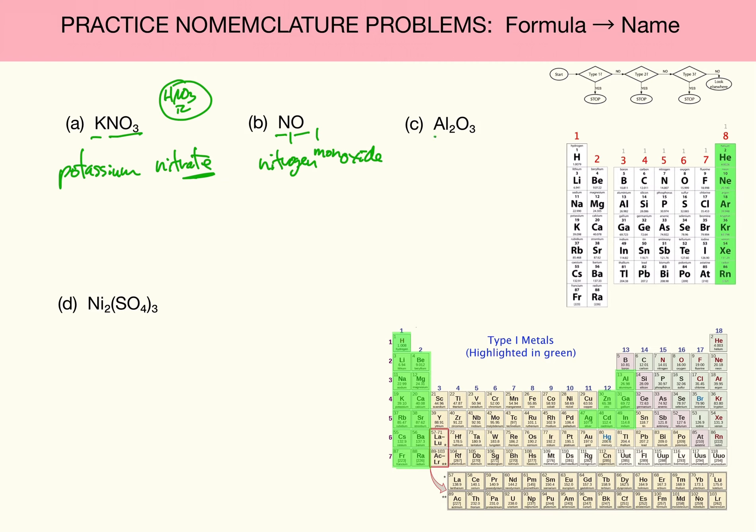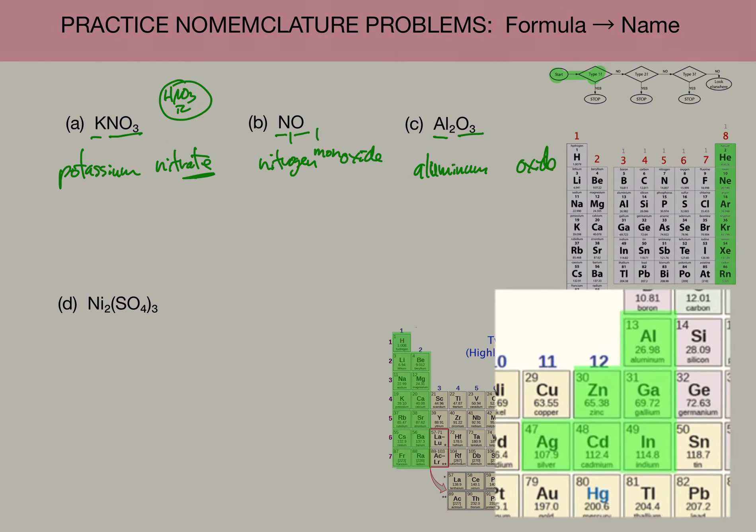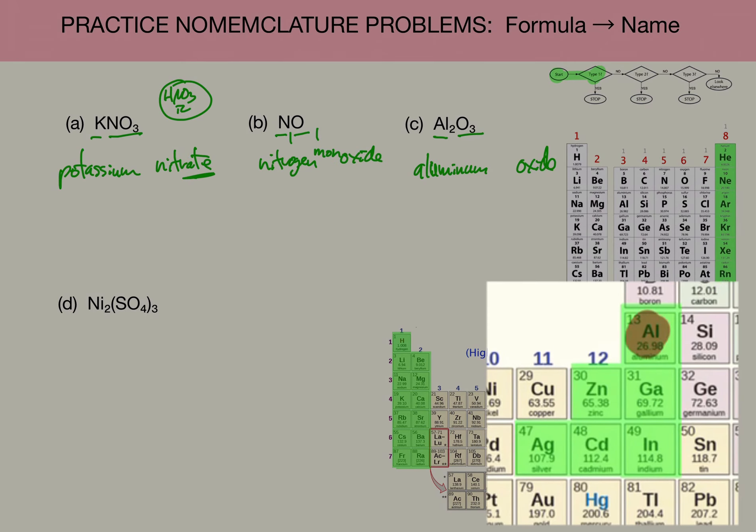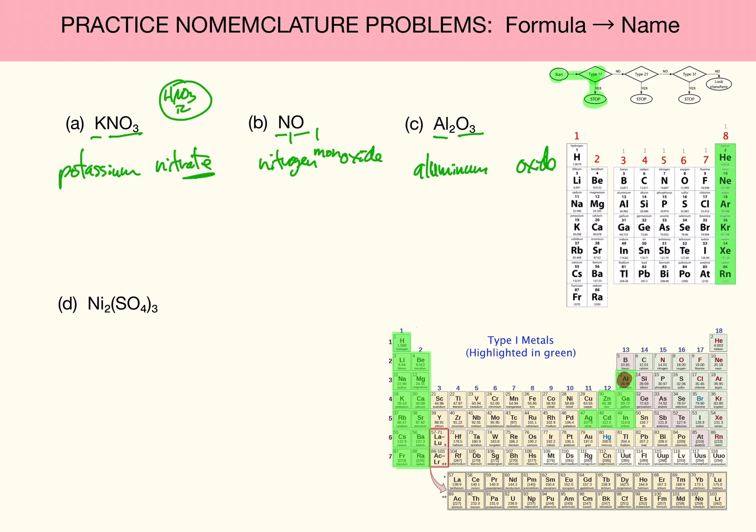Next, Al2O3. I see it's diatomic. So I'm going to name it as a type 1 aluminum oxide. Is it a type 1? Well, let's look and find aluminum on our chart. I see that it is a type 1, so I'm done. The name of this compound is aluminum oxide.